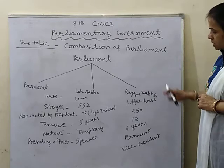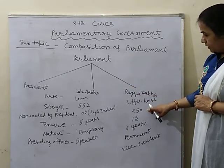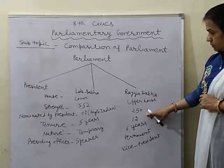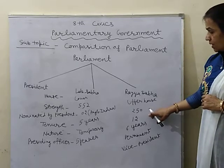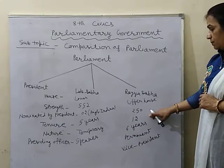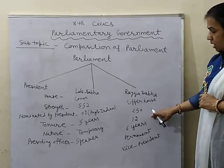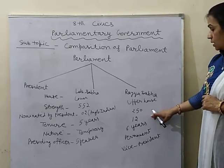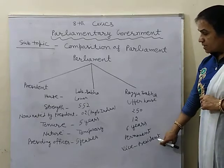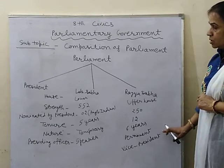Rajya Sabha — this is the upper house of Parliament. Total strength is 250. Members nominated by President: 12 members. These 12 members are taken from those who are famous in art, literature, science, and films. Its tenure is 6 years. It is a permanent house. And the Vice President presides over the Rajya Sabha.